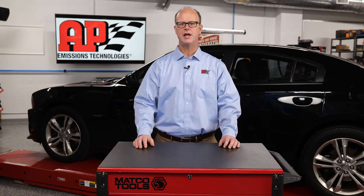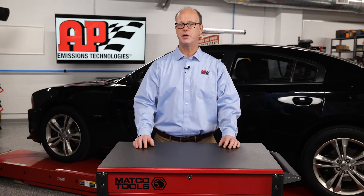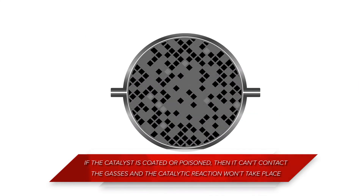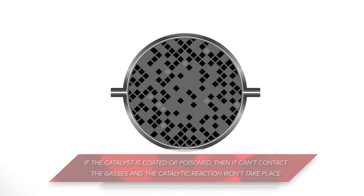Sometimes something coats the surface of the converter or plugs up the cells — like ash, oil, silicone, or phosphorus from antifreeze being introduced into the combustion chamber from a head gasket leak. If the catalyst is coated or poisoned, it can't make contact with the gases and the catalytic reaction won't take place.